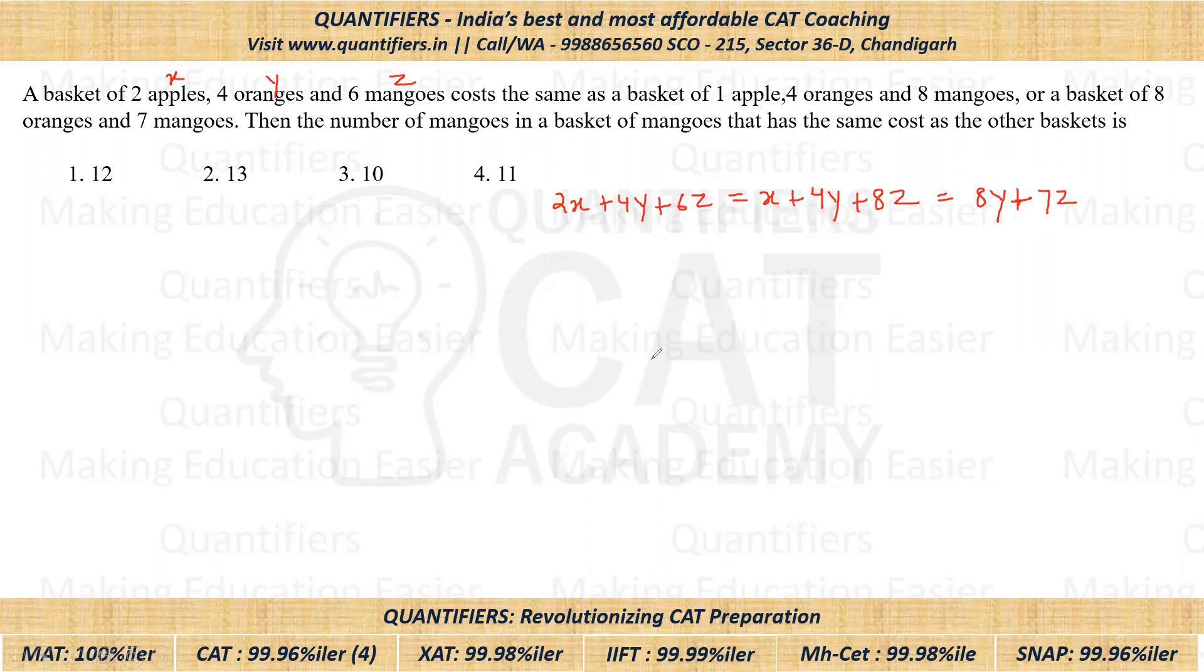So students, now here we have three equations. First of all, let us take the first and the second equation. If I use only the first equation and the second equation, you can see four Y is common to both, so four Y gets canceled out. We'll be left with X is equal to twice of Z.